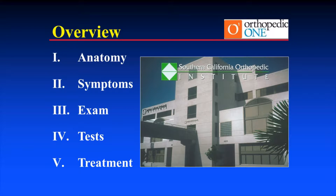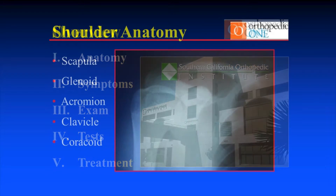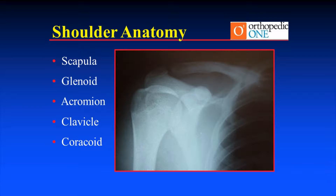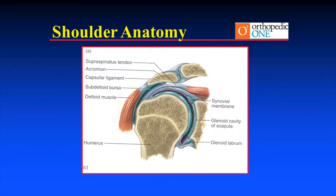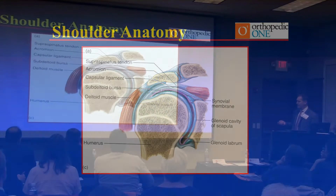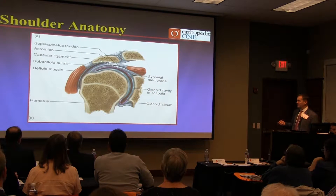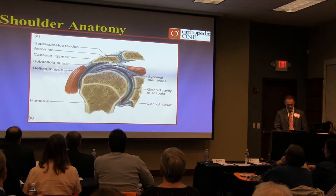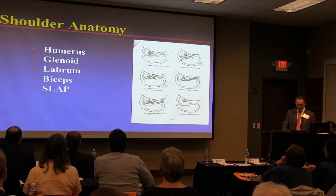We'll talk a little bit about anatomy, symptoms, exams, diagnostic tests, and treatments. The bones — and Dr. Johansson will probably hit on some of this as well — include the scapula, the shoulder blade, glenoid socket, acromion on top, clavicle, and coracoid. All of these combine to contribute to shoulder conditions and shoulder pain. Other anatomy includes cartilage, rotator cuff, bursa, deltoid, and the bony structures.